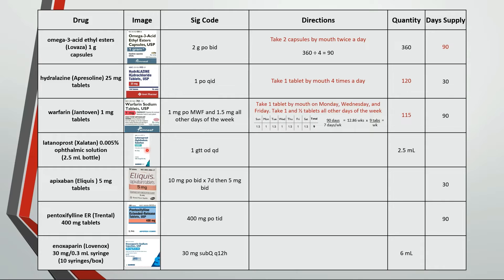Next up are eye drops. This is instill one drop in the right eye once daily. First calculate how many drops are in a bottle — it comes out to 50 drops per bottle. So this is a 50-day supply because we're using one drop a day.